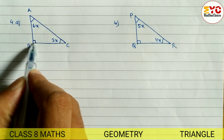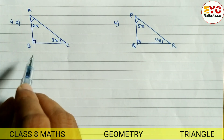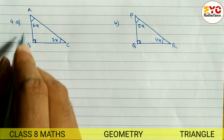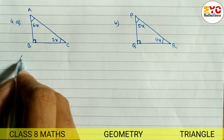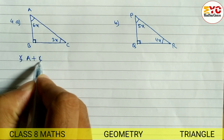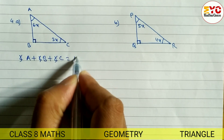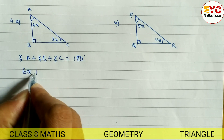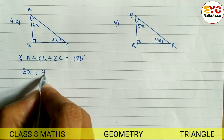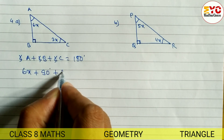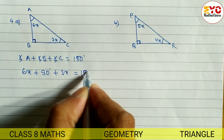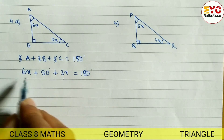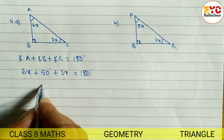You can see here this is a right angle triangle because here there is the sign of 90 degrees. Both are right angle triangles. We have to find out the value of X. We know that the sum of angles of a triangle is 180 degrees, so angle A plus angle B plus angle C is equal to 180 degrees. Angle A is equal to 6x. Angle B is equal to 90 degrees, and angle C is equal to 3x. The like terms are 6x and 3x, so we add them: 6 plus 3 gives 9x.